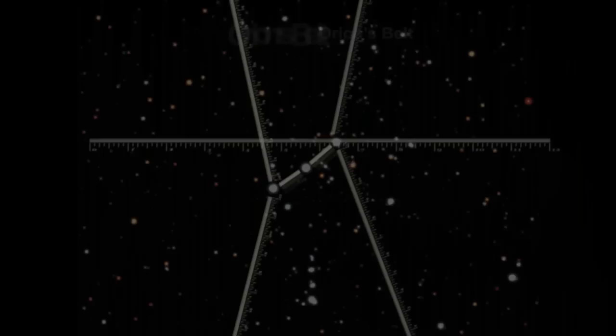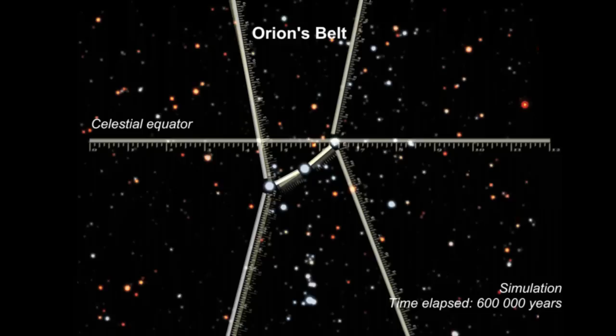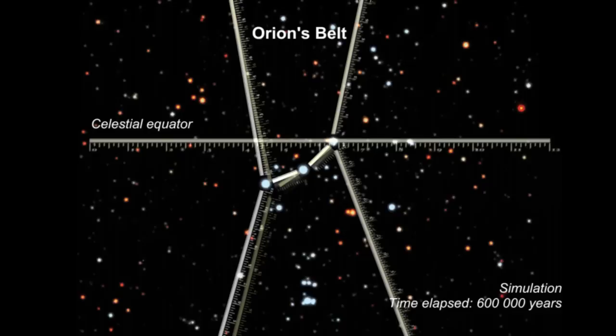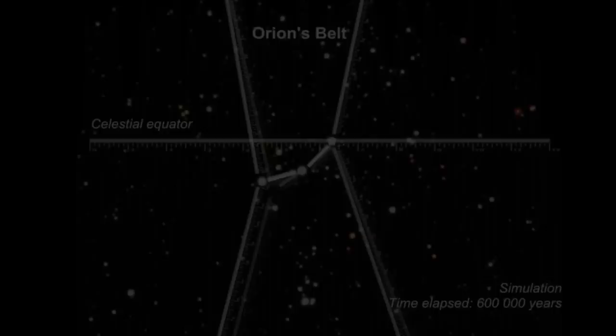The three stars famously known as Orion's belt. As these stars orbit the center of the galaxy, slowly, over time, their positions in the night sky change. This movement is known as the proper motion and is a result of a star's motion through space relative to the solar system.